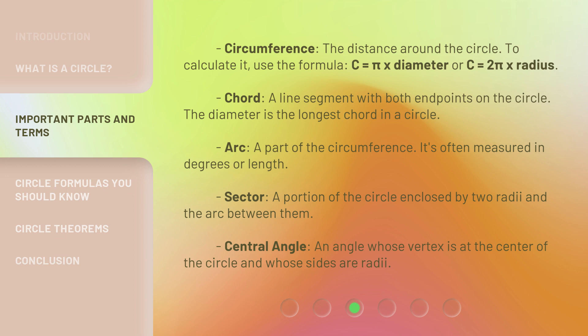Circumference: the distance around the circle. To calculate it, use the formula C = π × diameter or C = 2π × radius.